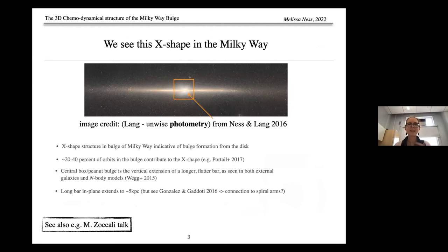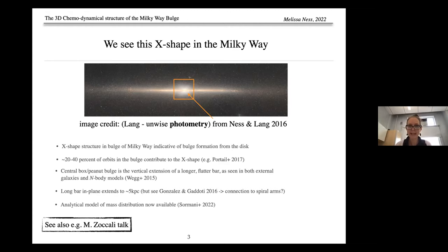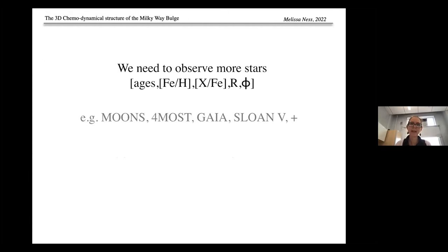The X-shape underlies a central boxy peanut, which is the vertical extension of a longer, flatter bar — seen in both external galaxies and N-body models. The long bar in the plane has been measured to extend to about 5 kiloparsec, though there is some debate about its connection to spiral arms at that distance. There is now an analytical model available of the mass distribution for the bulge, handy in the Gaia era for integrating orbits in the inner galaxy.